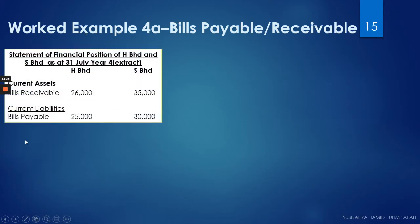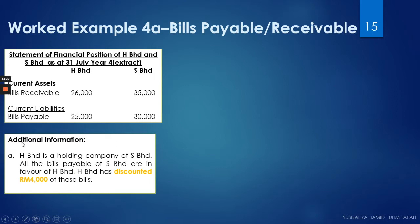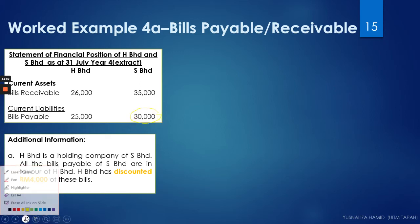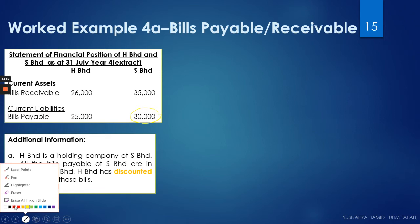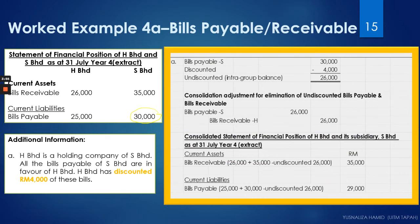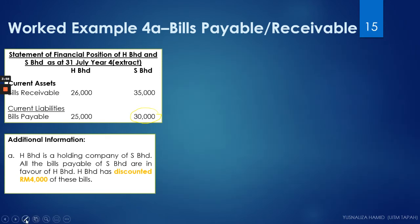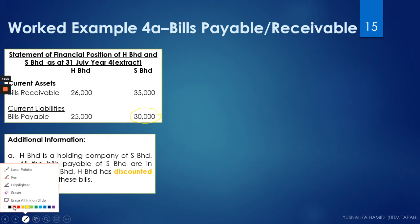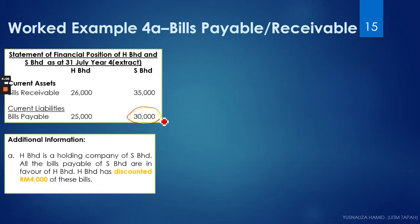Work example 4A focuses on additional information A, covering bills receivable and bills payable. We are informed that H Berhad is the holding company of S Berhad. All bills payable of S Berhad amount to 30,000, and all 30,000 are actually intercompany bills — meaning none of it relates to parties outside the group members.